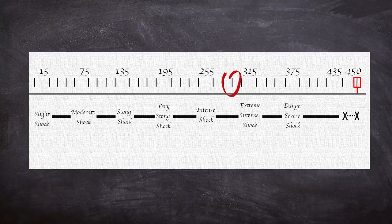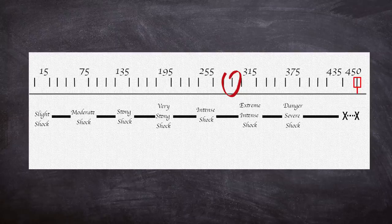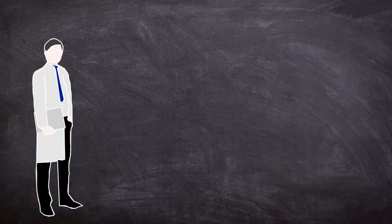Above 300 volts, the learner would kick on the wall and then no longer give answers to the teacher's multiple choice questions. If the teacher showed any hesitation, the experimenter was able to give one of four prodding responses in sequence. The first was: please continue, or please go on.